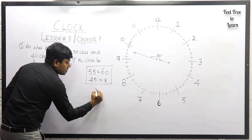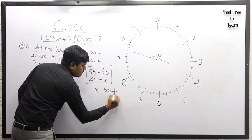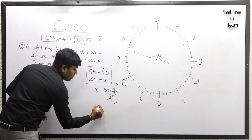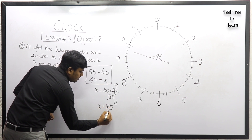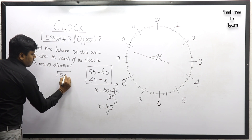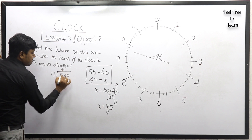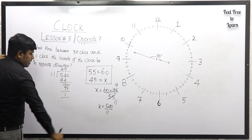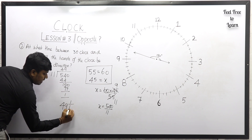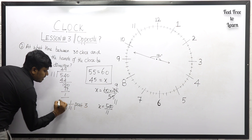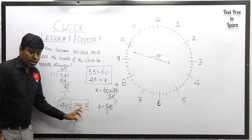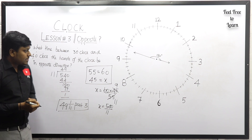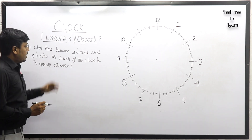Cross multiply: x = (60 × 45) / 55. Cancel by 5: 11 times and 9 times, giving x = 540/11. Divide 540 by 11: 49 remainder 1, so x = 49 1/11. The answer is 49 1/11 past 3. After 3 o'clock, at the 49 1/11th minute, both hands of the clock will be exactly opposite to each other.